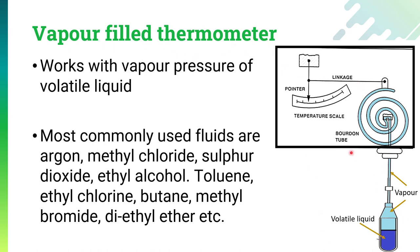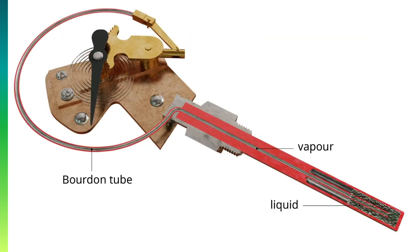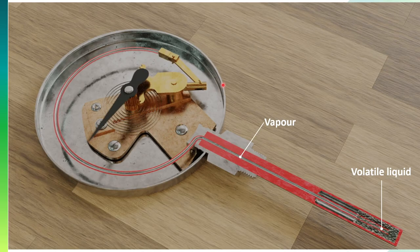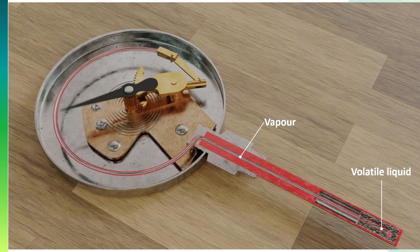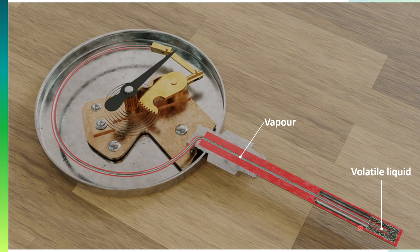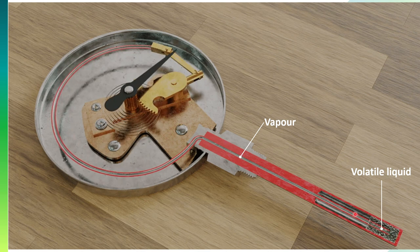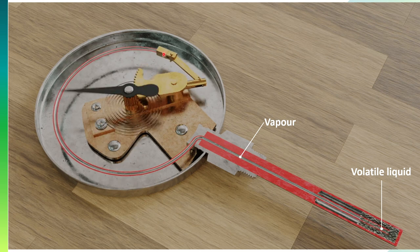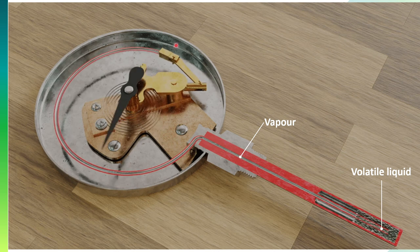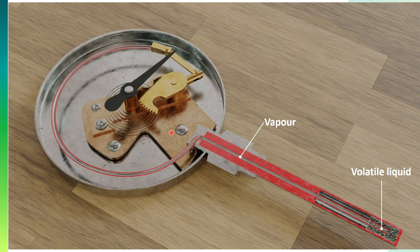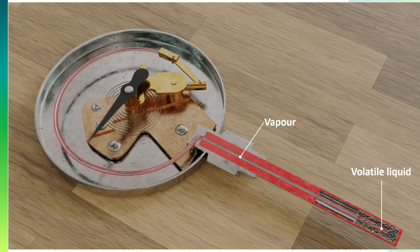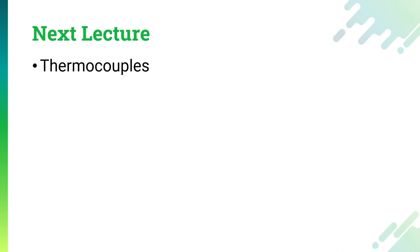In the practical figure of the vapor-filled system, there is a liquid section and a vapor section connected to an indicating device via a Bourdon tube. When temperature rises, the volatile liquid converts to vapor, increasing the pressure in the system, and the Bourdon tube moves the indicator accordingly. This is how the complete filled thermometer system works. In the next lecture, we will be talking about thermocouples. Till then, keep learning and have a good day.